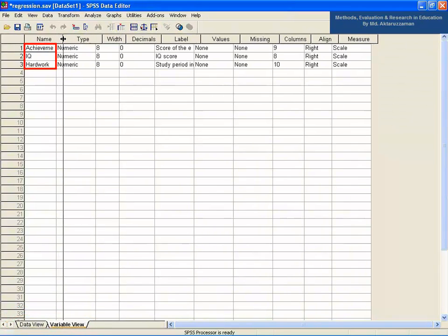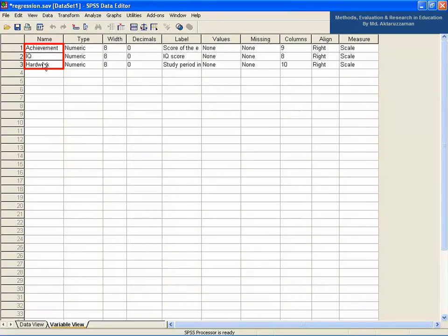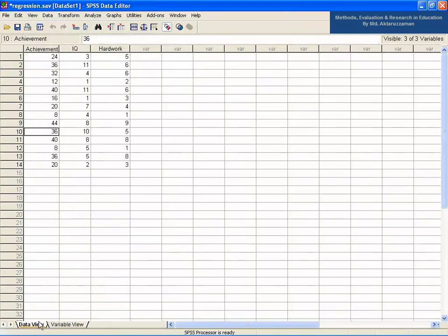Let's check the variable view of the data. There are three variables: Achievement, IQ, and Hard Work, which are of numeric type and scale measure. Go back to the data view of the SPSS data editor. You see the variables at the top of each column. See the score of 14 students for achievement test and IQ, and also hard work in terms of study period in hours.